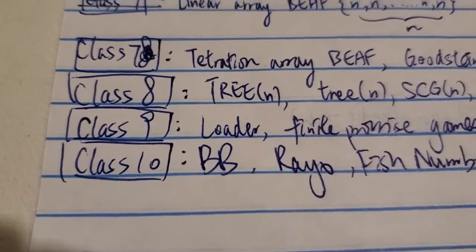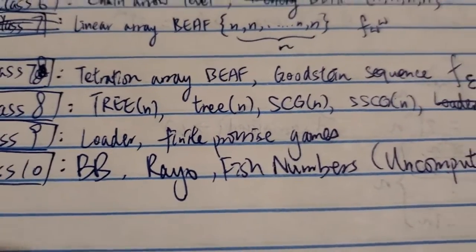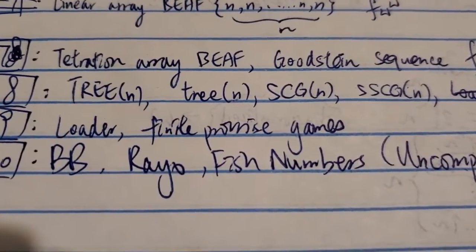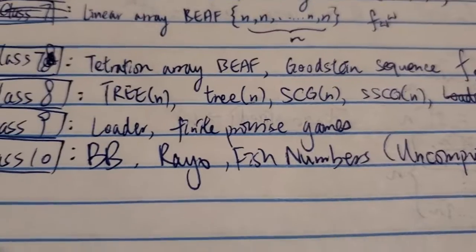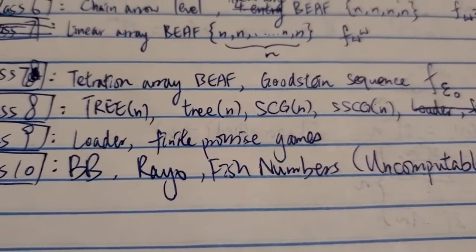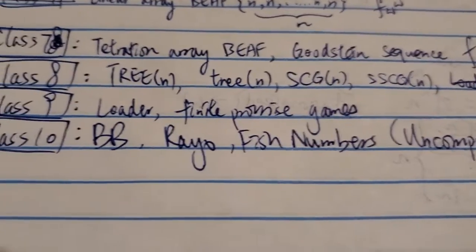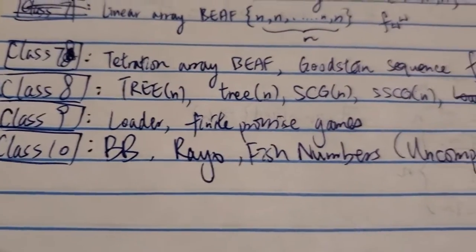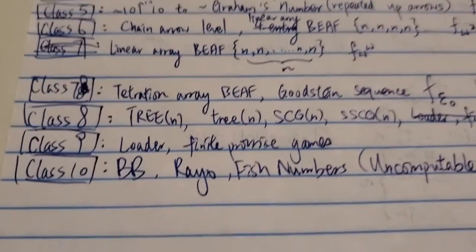Class 10 includes the Busy Beaver function. So numbers from Busy Beaver or the RAYO function, RAYO number and the FISH numbers, which is kind of related to the RAYO function. There are a lot more numbers as well, but most of them are kind of ill-defined. So I didn't include them here. Those are the biggest numbers in terms of Googleology.